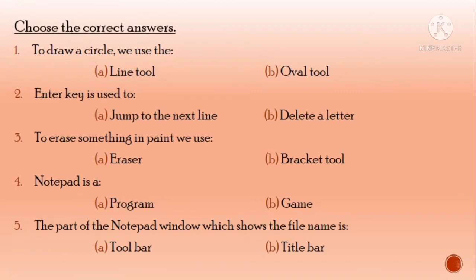Question number one, choose the correct answers. To draw a circle we use the line tool or oval tool. For a circle, which do you use? You use the oval tool. This answer is B. Enter key is used to jump to the next line or delete a letter. We use it for the next line, so the answer is A. Number three, to erase something in paint we use eraser or bracket tool. The answer is A. Number four, notepad is a program or game. Notepad is a program, so the answer is A. Number five, the part of the notepad window which shows the file name is tool bar or title bar. The file name shows in the title bar. Its answer is B.